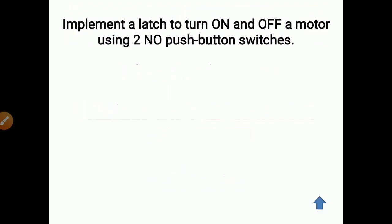Let's discuss the first example: implement a latch to turn on and off a motor using two normally open push button switches. We have to turn on and off a motor — that is one output — using two normally open push button switches, and we have to implement latching here.